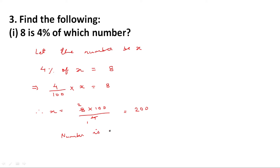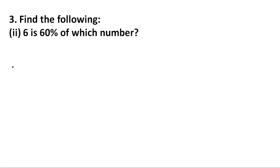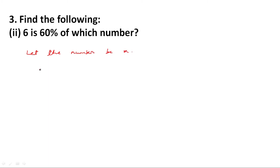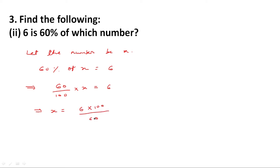Number is 200. Next question: 6 is 60% of which number? Let the number be x. So 60% of x is equal to 6. This implies 60 upon 100 multiplied by x is equal to 6. This implies x is equal to 6 multiplied by 100 upon 60, with the zeros cancelling, giving x equal to 10. Therefore 6 is 60% of number 10.